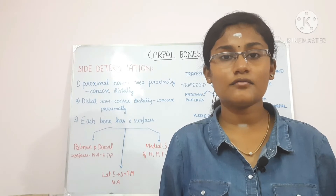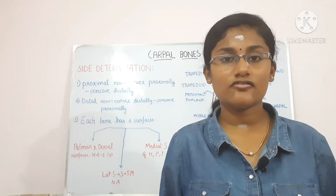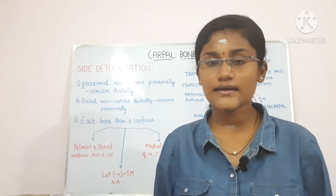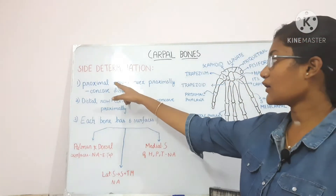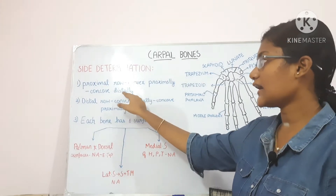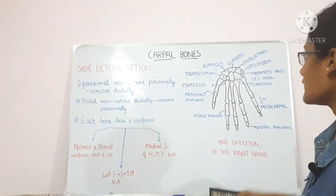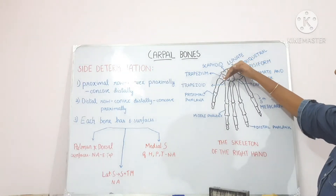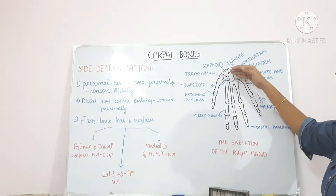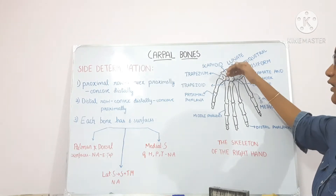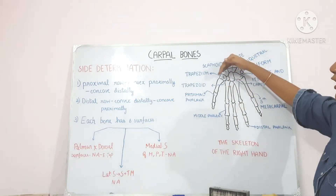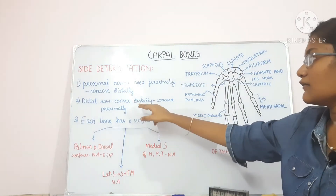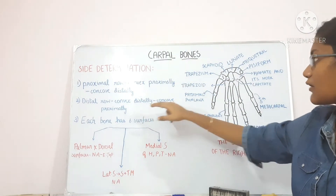Now let us talk about the side determination of the eight bones. The first hint is that the proximal row is convex proximally and concave distally. So the proximal row is concave distally, meaning towards the end, and it is convex proximally. The distal row is convex distally and concave proximally.